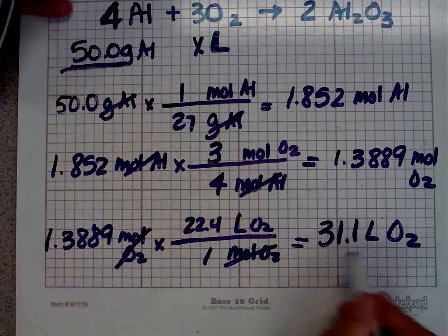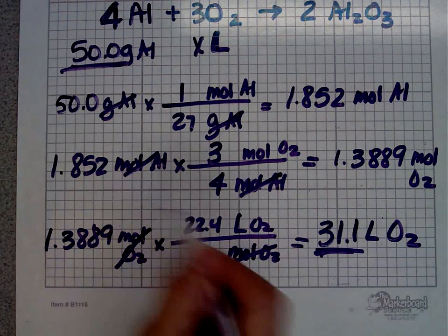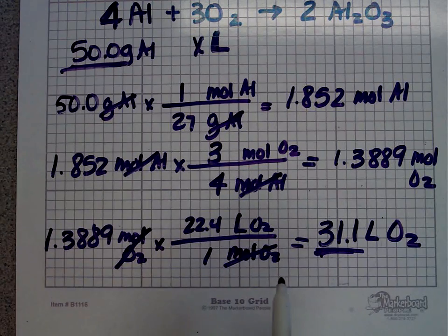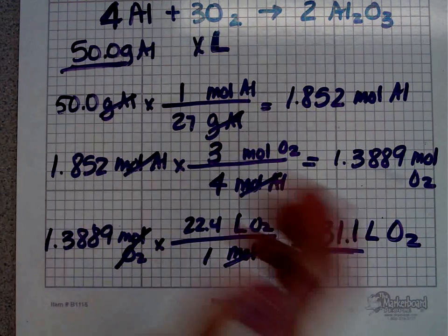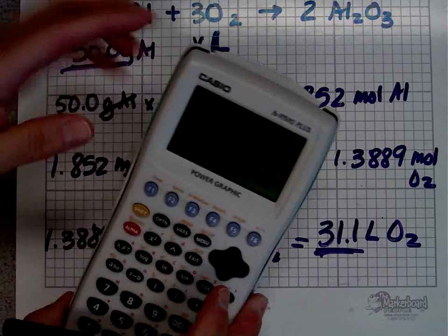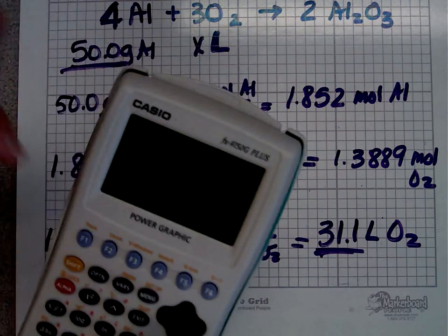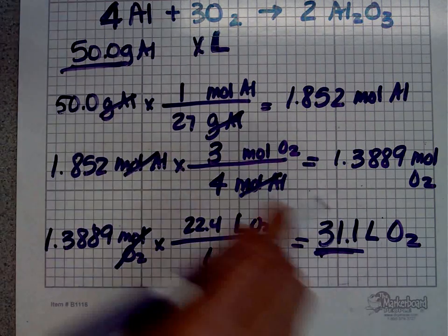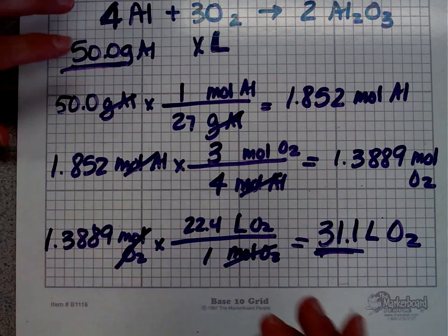31.1 liters of oxygen. I started with 3 sig figs, I should end with 3 sig figs. You don't want to round in the middle because sometimes that will make your answer be off. So keep carrying your numbers. I actually just carried it on my calculator, I just let it go. I didn't change it at all. Then I rounded at the end, I counted sig figs at the end.